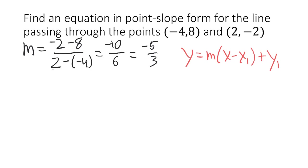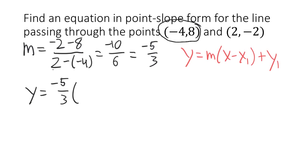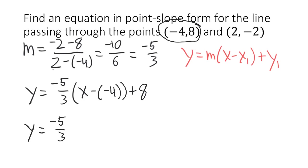The m we just figured out is negative 5 over 3, so it's going to be y equals negative 5 over 3. Now x1 and y1 are supposed to come from the coordinates of a point on the line, but we have two points to choose from. The good news is it doesn't matter — you can use either one and you will end up with an equivalent equation. So let's use the first point, negative 4 comma 8. Inside the parentheses we'll have x minus negative 4, and then outside we'll have plus 8. Two negatives make a positive, so we have y equals negative 5 over 3 times (x plus 4) plus 8. There is a point-slope form of the equation.